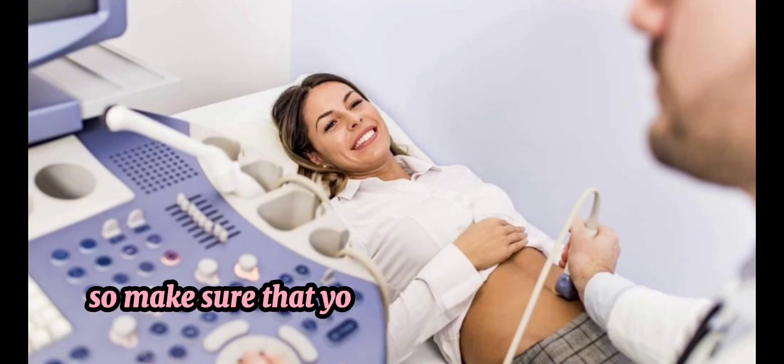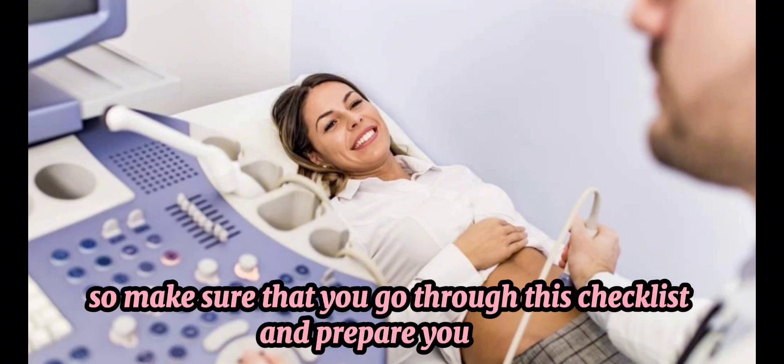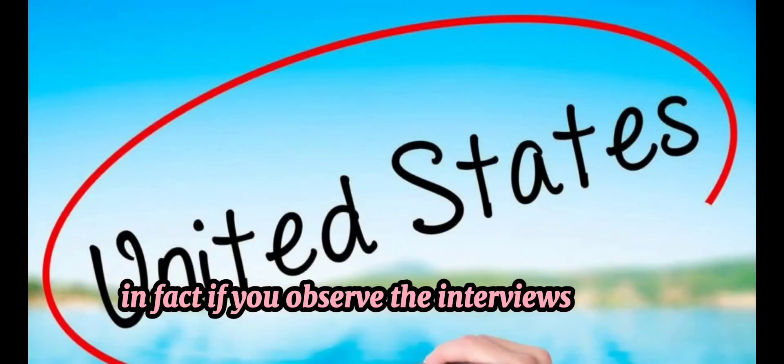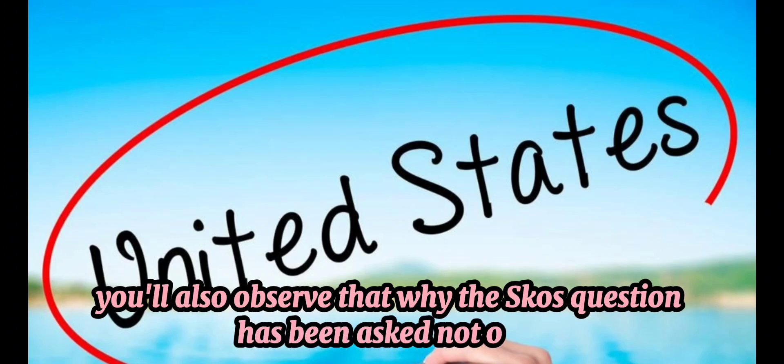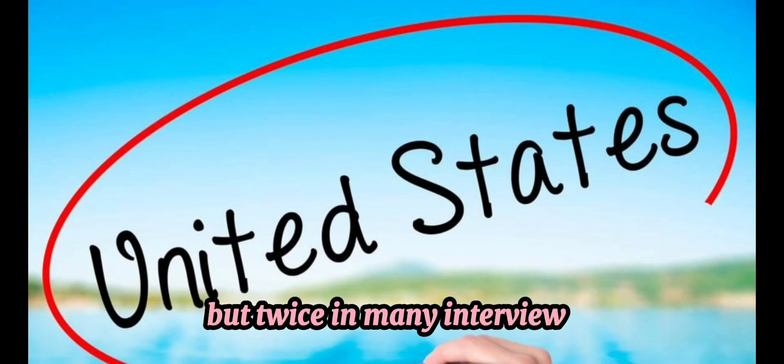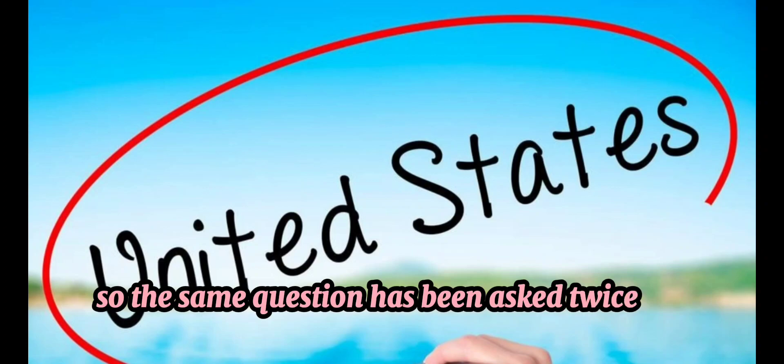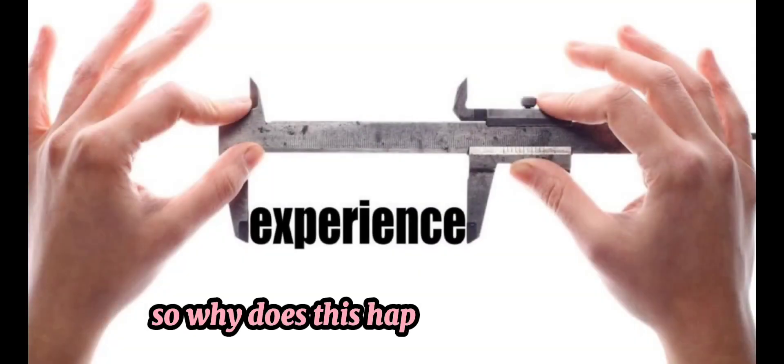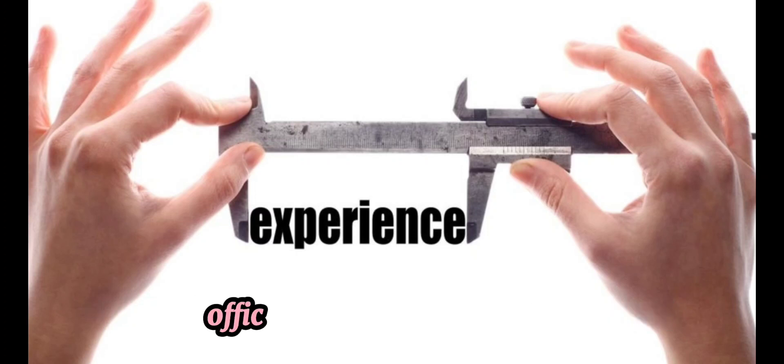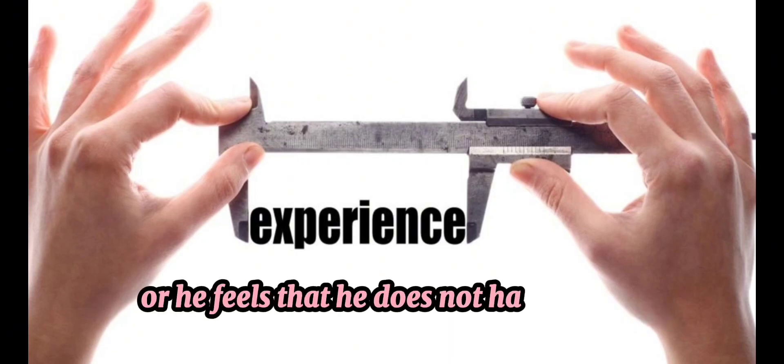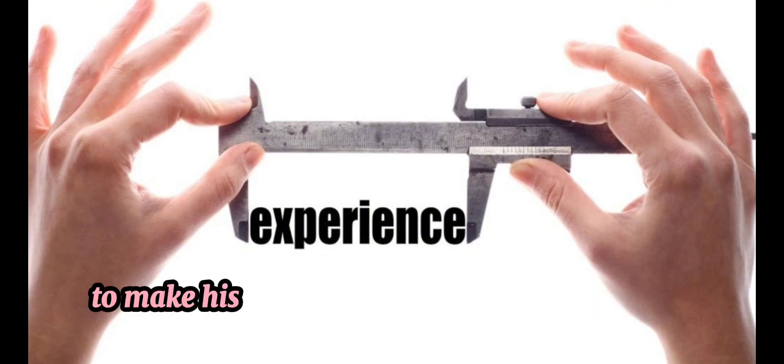So make sure that you go through this checklist and prepare yourself. In fact, if you observe the interviews which happened in April 23, you'll also observe that why this course question has been asked not once but twice in many interviews. So the same question has been asked twice by the visa officer. So why does this happen? This happens when the first answer that you gave to the visa officer is not fully convincing or he feels that he does not have all the information required to make his decision.